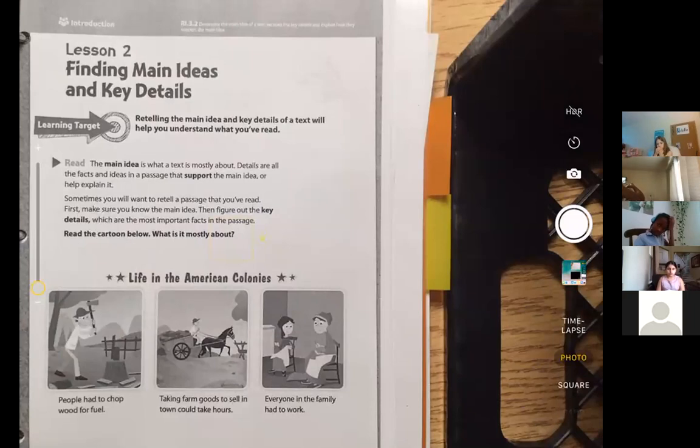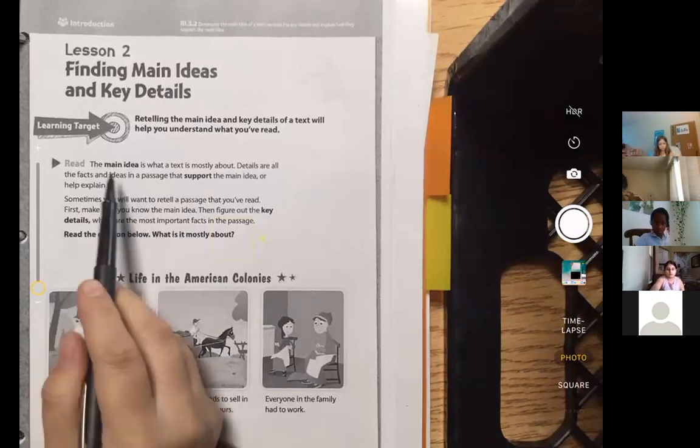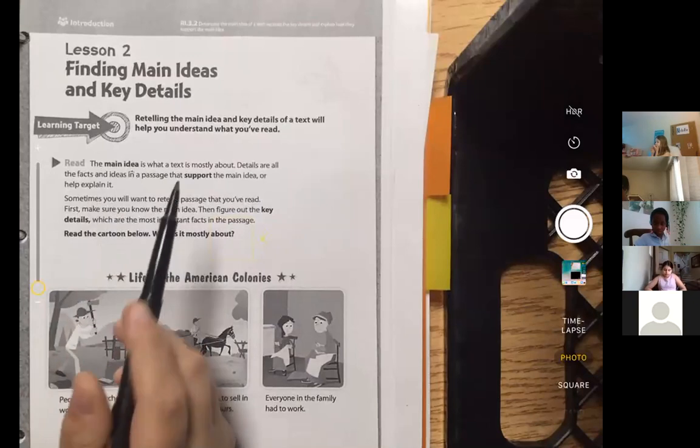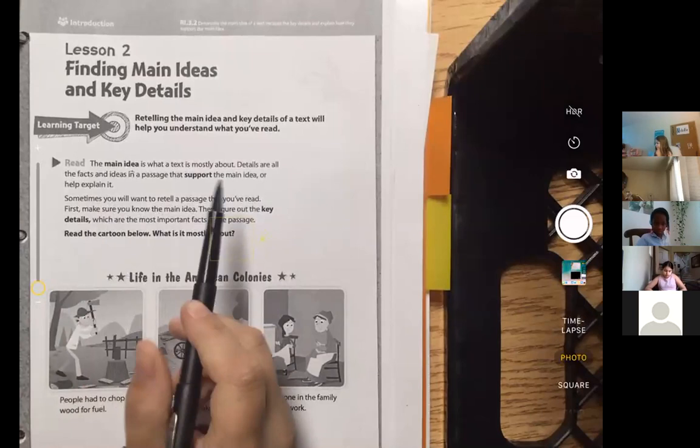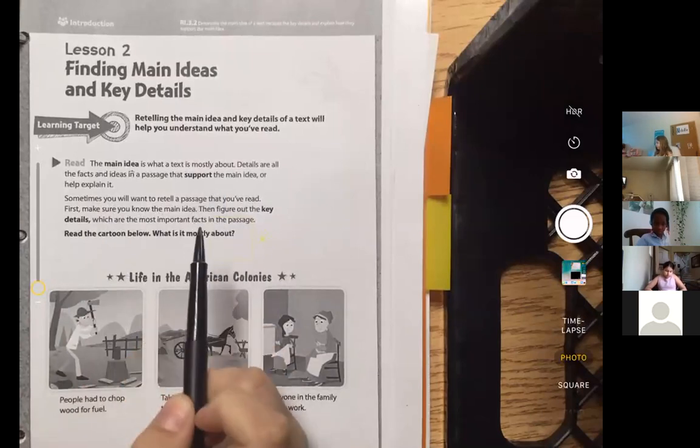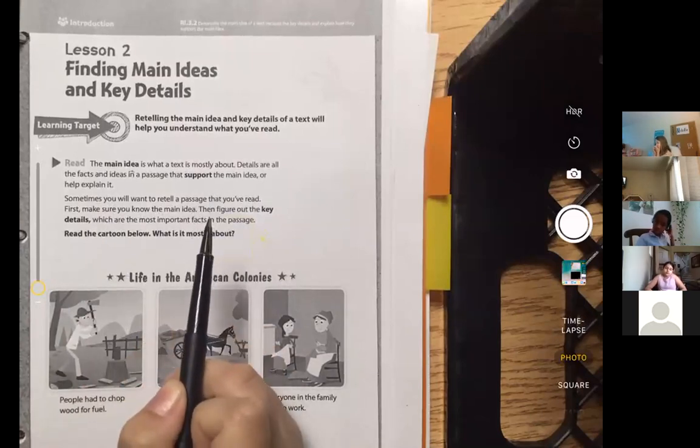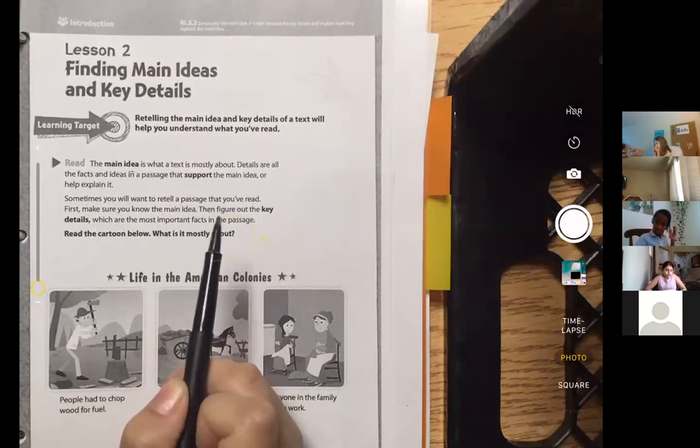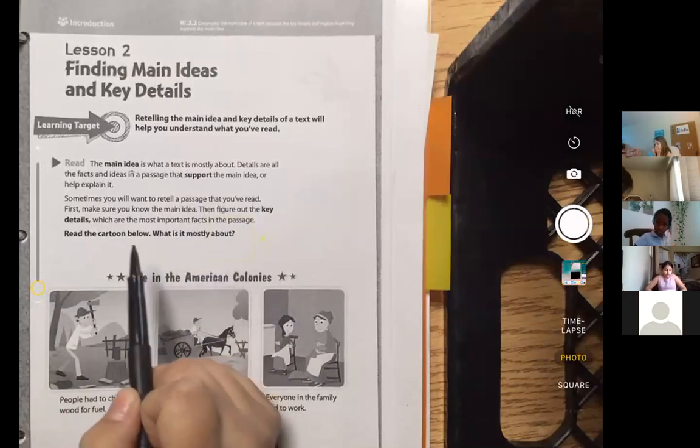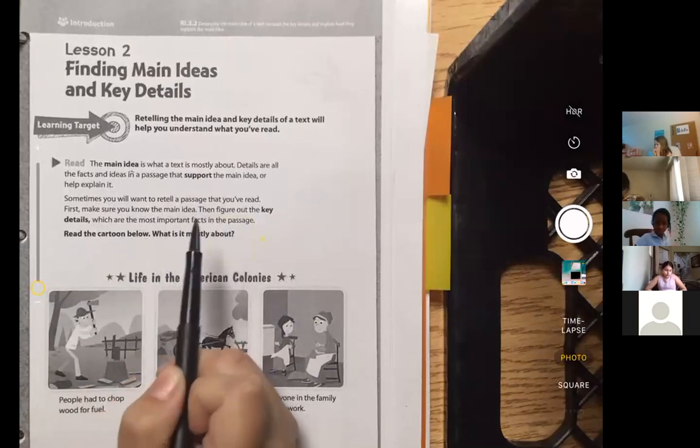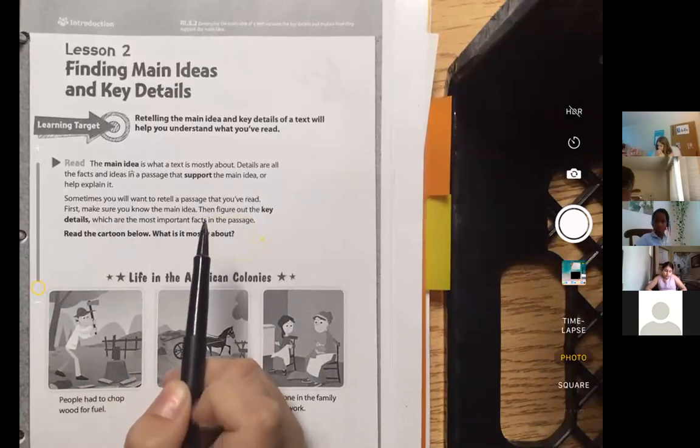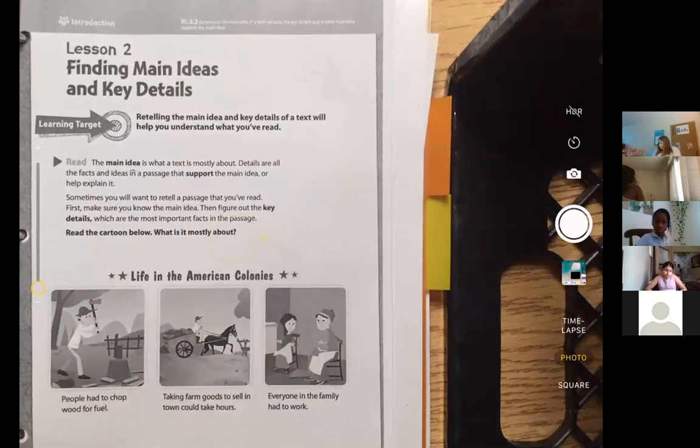Yeah, there we go. Okay, good job, thank you Jesnor. So going back before we move to the next part, here are our key words, right? Main idea—that is what the text is mostly about. And then you get details that support or help explain the main idea. So sometimes you're gonna be asked to retell a passage, right? But in order to retell, you have to know the main idea.